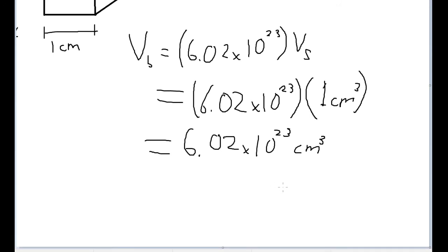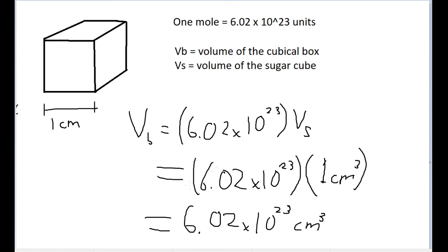So we now know that the volume of the larger cubical box is just going to be equal to 6.02 times 10 to the 23rd cubic centimeters. That is our volume of the larger box. Now we have the volume, but the problem asks us to find the edge length of that box. Let's think back to the same logic we used to find the volume of the sugar cube — by the definition of a cube, volume is equal to the cube of one of the edge lengths.